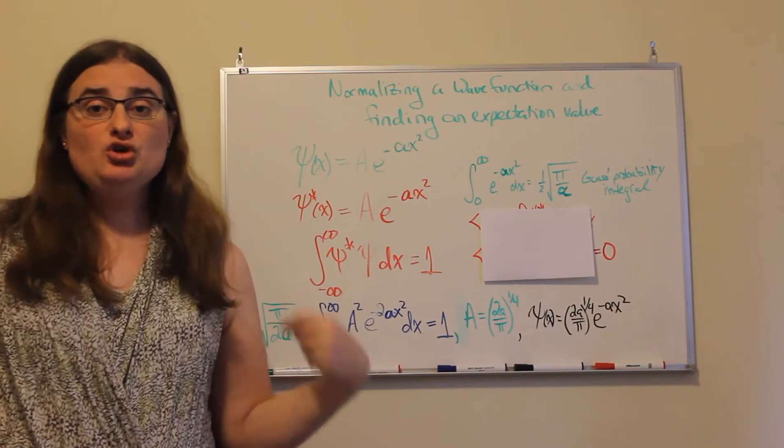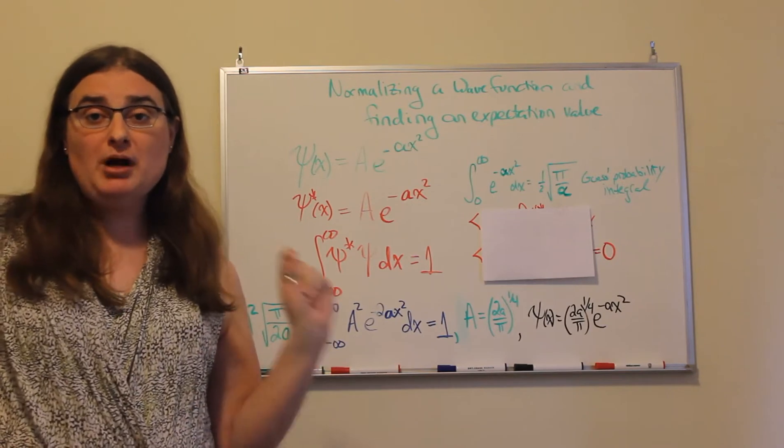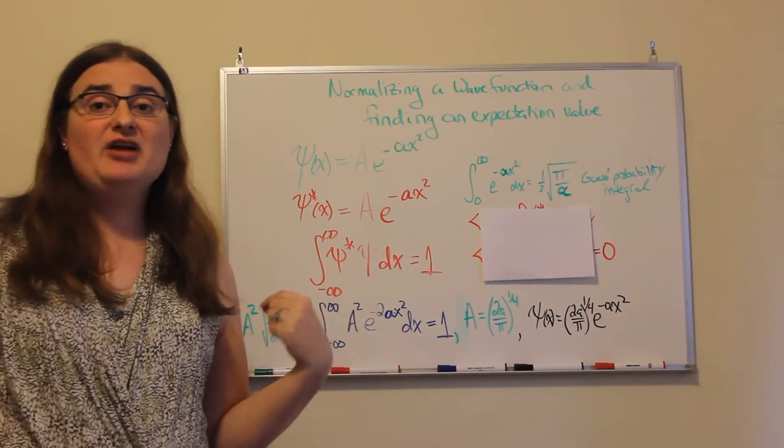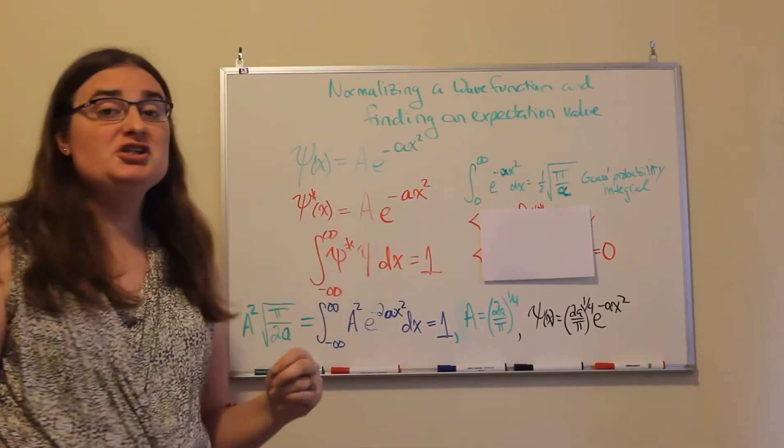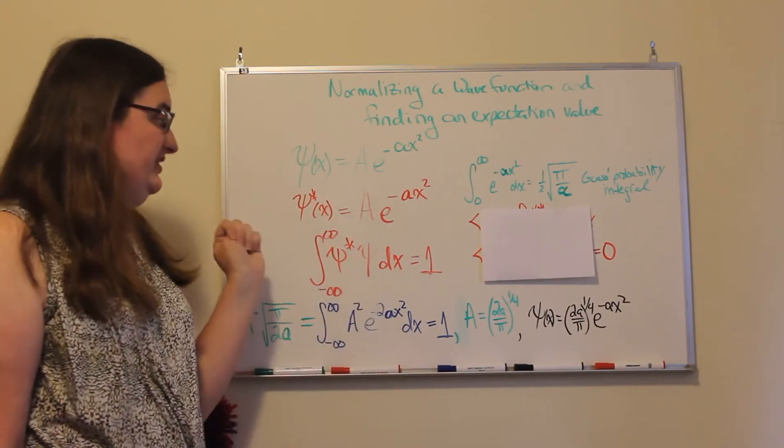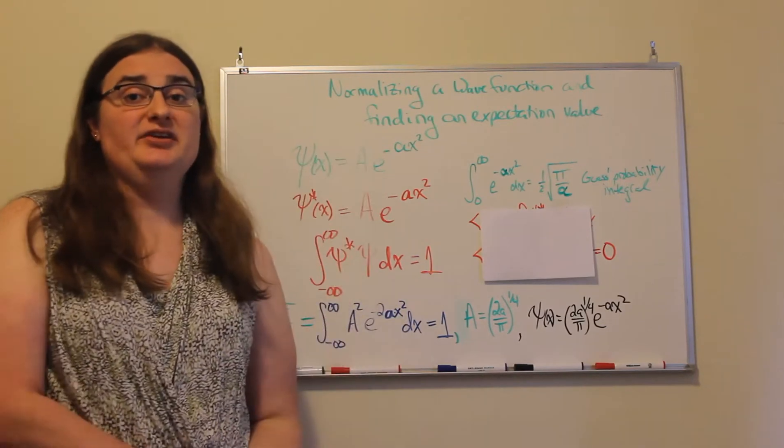Now for most quantum wave functions, most probability waves, they have complex dependence. They depend on the square root of negative one. This function doesn't, so its complex conjugate is exactly the same thing.